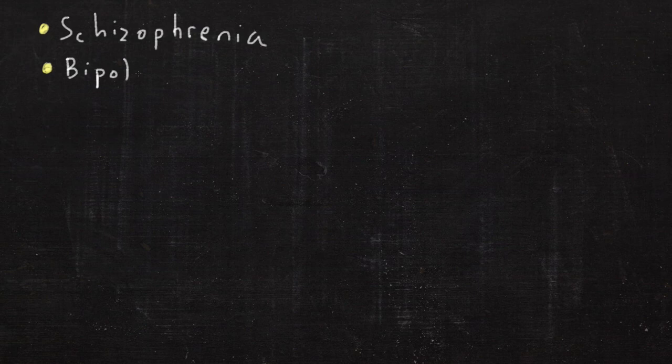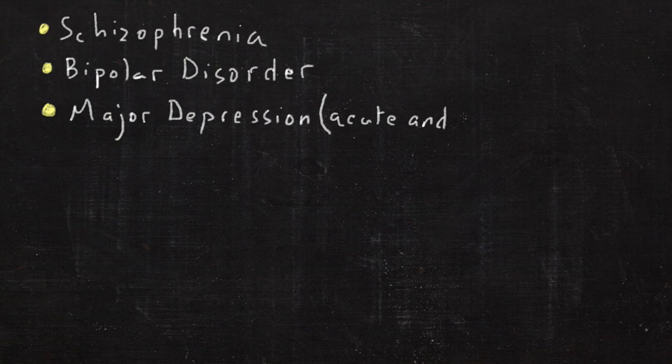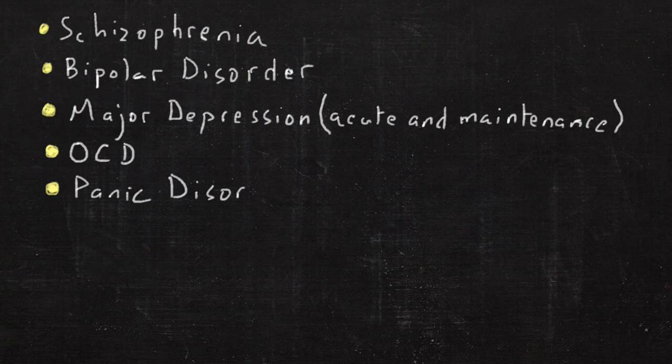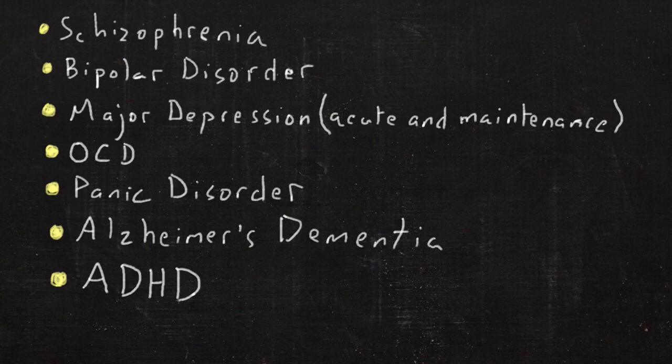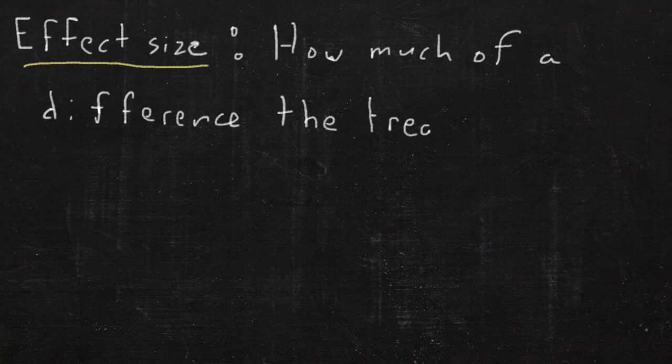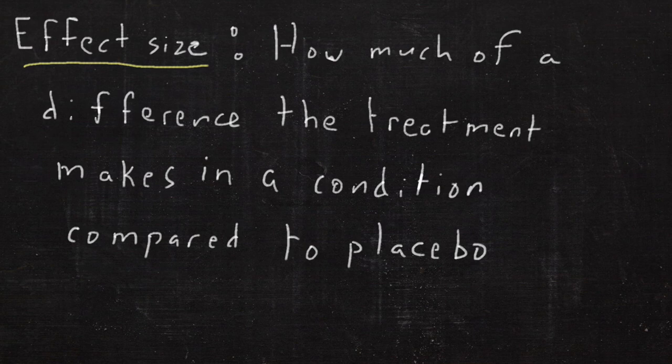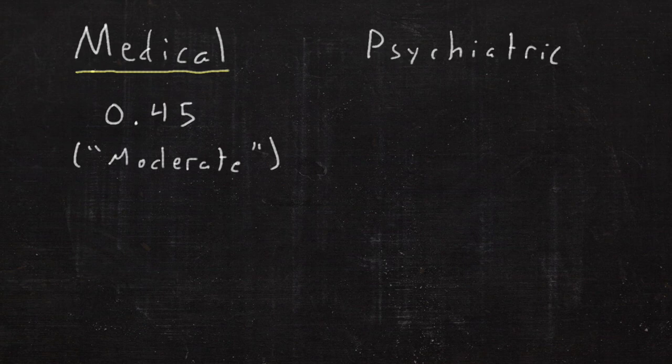Well, those disorders were pretty standard: schizophrenia, bipolar disorder, major depression on the list, both the acute and the maintenance phases accounting for two disorders, obsessive-compulsive disorder, panic disorder, Alzheimer's disease, and the modern bugaboo ADHD. So they looked at the effect size, which is how much of an effect or difference does the treatment make in a condition compared to placebo, which has some sort of effect.